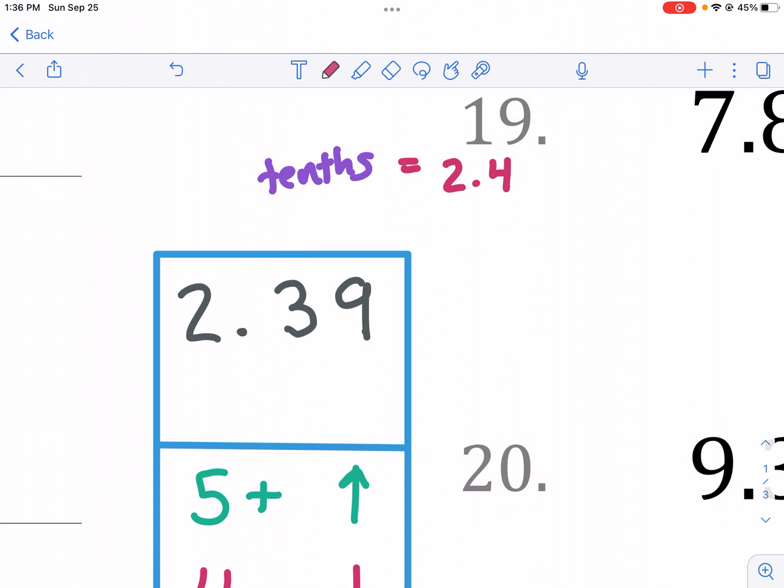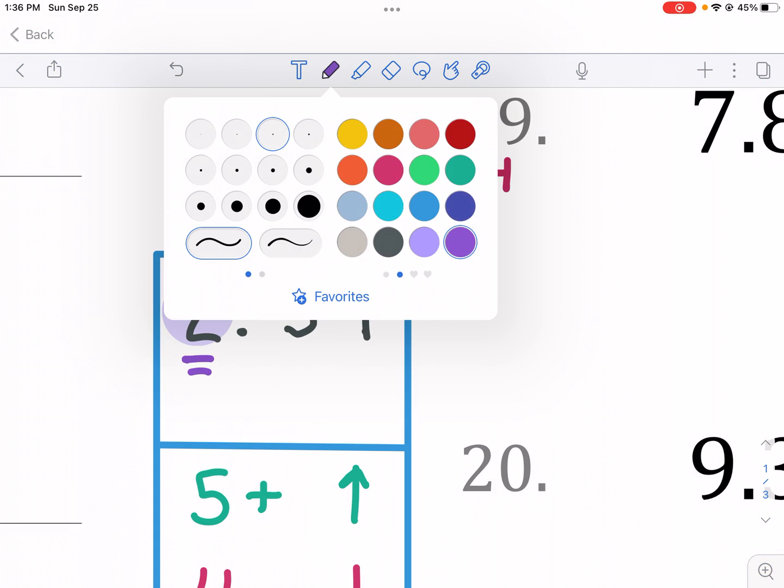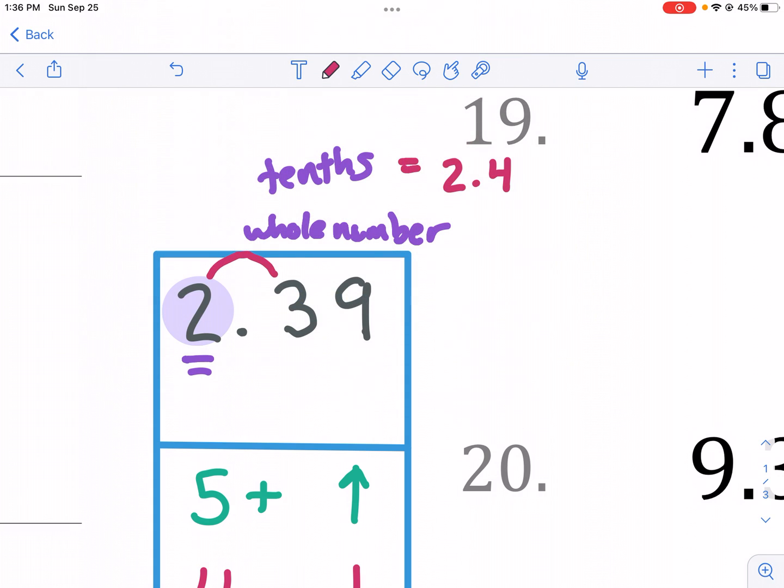And now let's round to a different number. Let's say we wanted to round to the nearest whole number. Whole number is another name for the ones place. So we need to identify the whole number or the ones place. And that is there. For emphasis, I'm underlining it also in case you don't have a highlighter. And again, what am I doing? I'm looking to the number to the right.